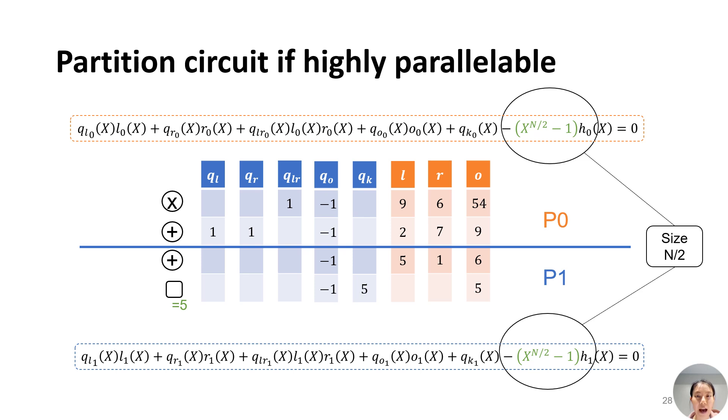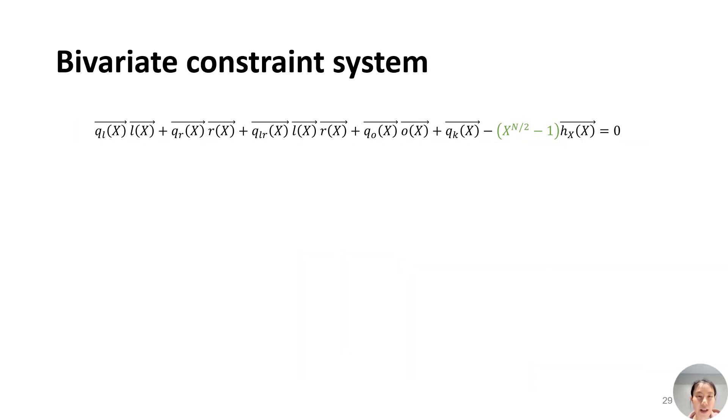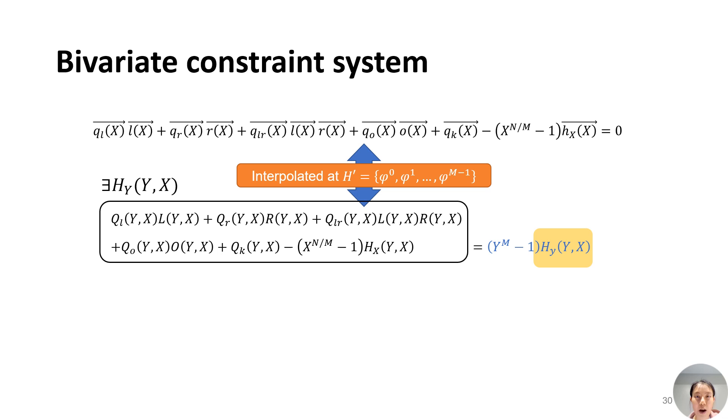Suppose we have M machines. We partition the circuit into M parts and write an independent argument for each part. This is an illustration for M equals 2. Then we apply the following transformation to convert it to a bivariate constraint. Initially, we have this vector identity where each vector stores polynomials distributed in all the machines. In the next step, we apply a similar method as in Plonk, converting it into a bivariate polynomial identity by interpolating each vector of polynomials on the powers of another root of unity.